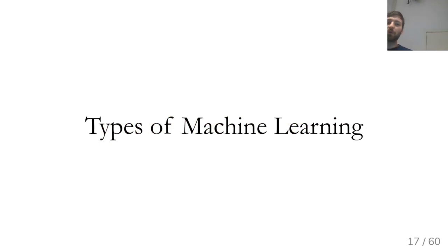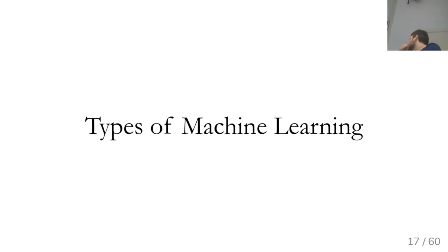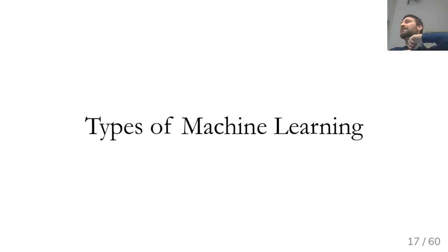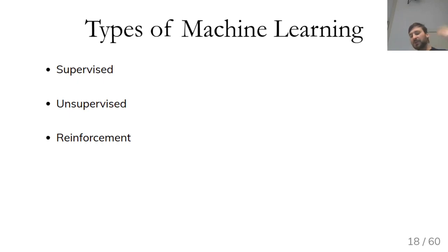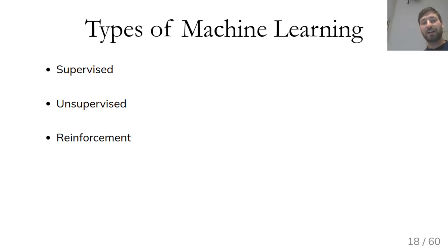There are three main types of machine learning: supervised, unsupervised, and reinforcement. In this class we'll focus mostly on supervised learning, because it's by far the most successful in practice today. We'll also do some unsupervised learning, and no reinforcement learning. The idea behind supervised learning is that you collect samples drawn from a distribution P(X, Y), where X is features describing a data point — say a patient — and Y is the target you want to predict, such as their diagnosis.